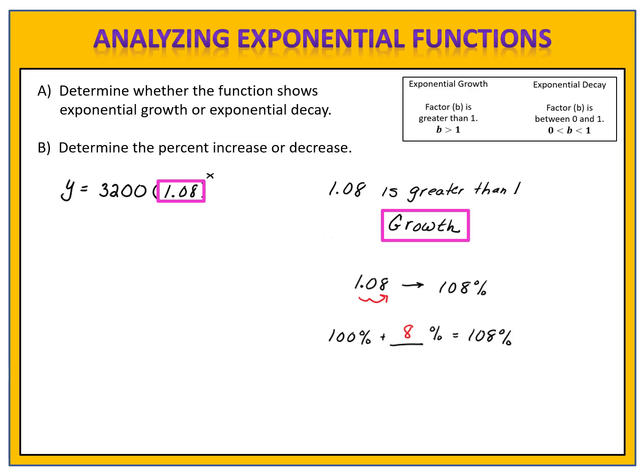8. So we have an 8% increase. This function, y equals 3200 times 1.08 to the x, is an exponential growth function with an 8% increase.